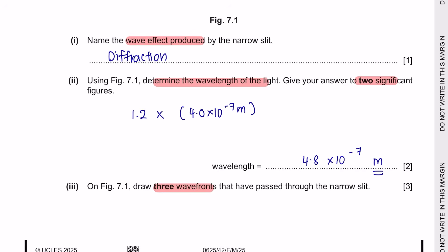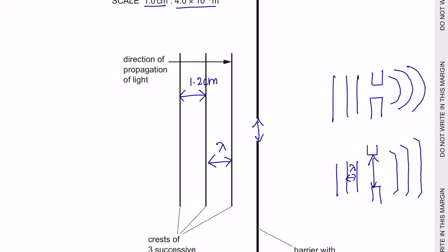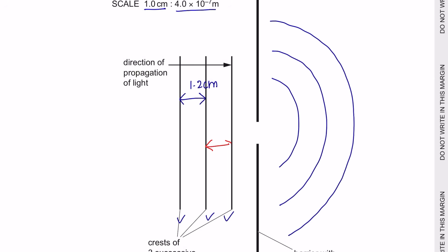Unit for wavelength is in meters. Next part three, draw three wave fronts that have passed through the narrow slit. Now the size of the gap is approximately the same as the wavelength. So that means your diffraction would be curved like this. If the gap is much larger than the wavelength, then the wave diffracted would be slightly less curved. So in this case, you can draw three semicircle lines. Remember that the wavelength before and after the gap should be the same.